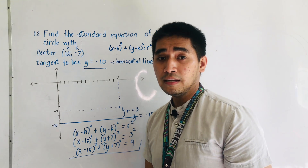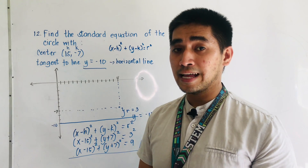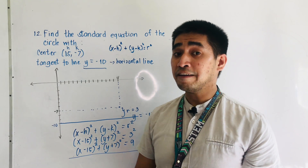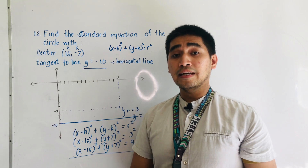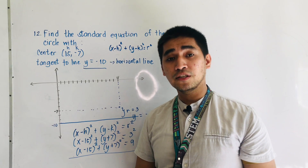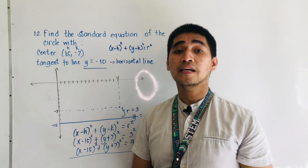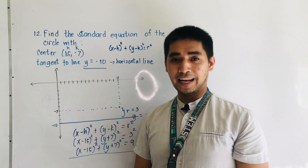Again, do not forget: if it is tangent to a line y, the line is horizontal. If it is tangent to the line x, the line is vertical.